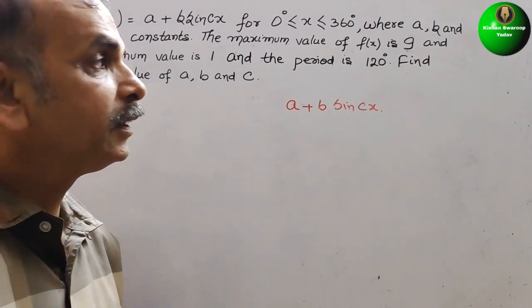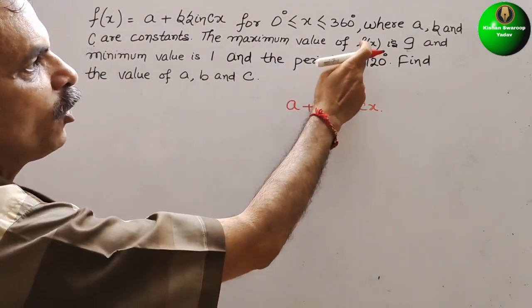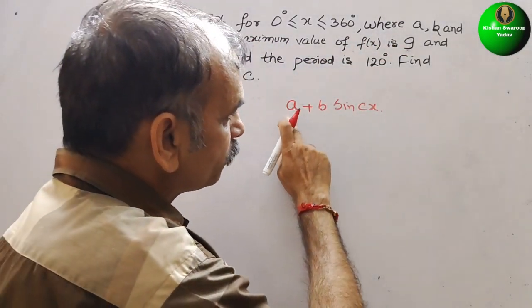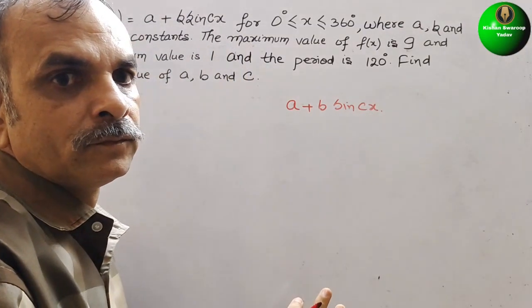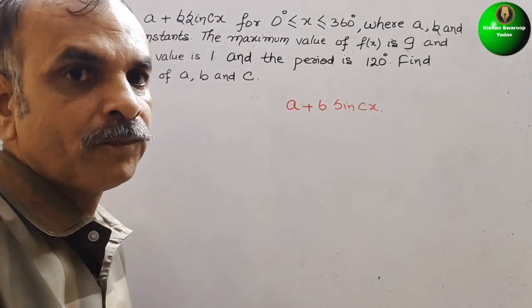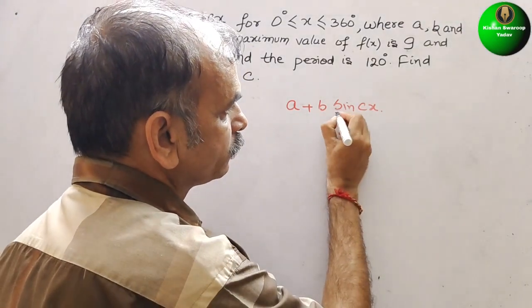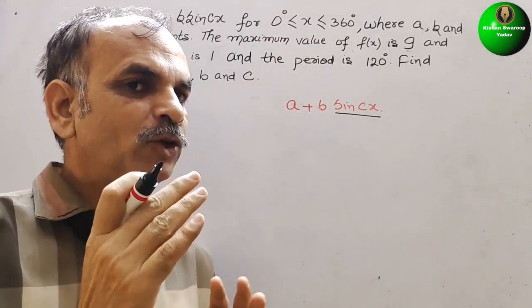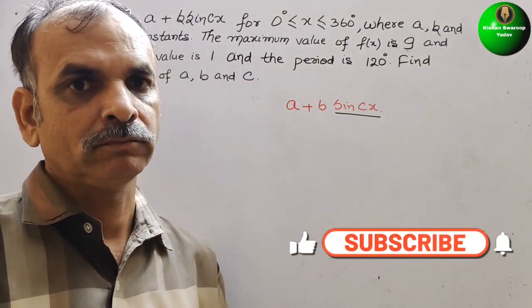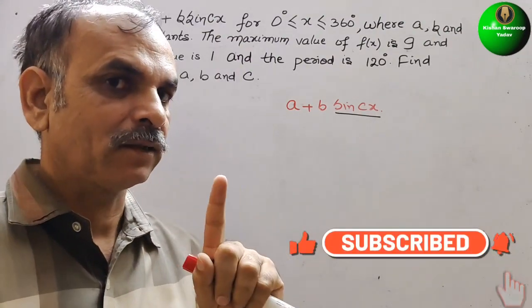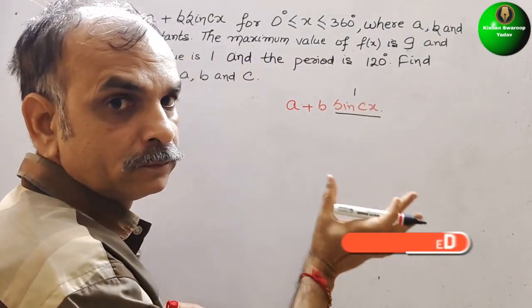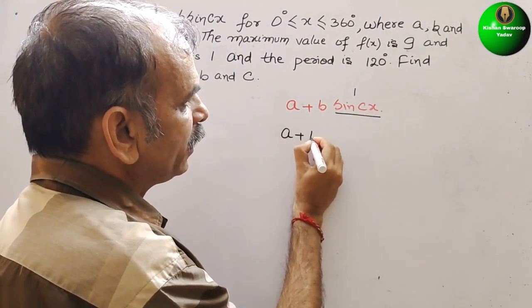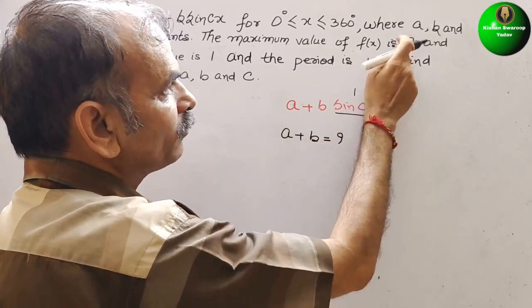How it will be? They have given the maximum value of f(x) is 9. That means it should be positive. So here this should be positive. And we know that sine amplitude varies from 1 to minus 1. So if you take 1, then only it will be positive and maximum. So now we will get a plus b is equal to 9. This value.